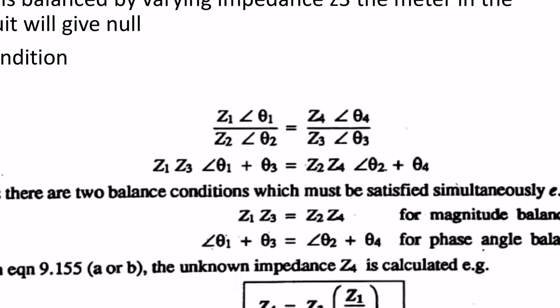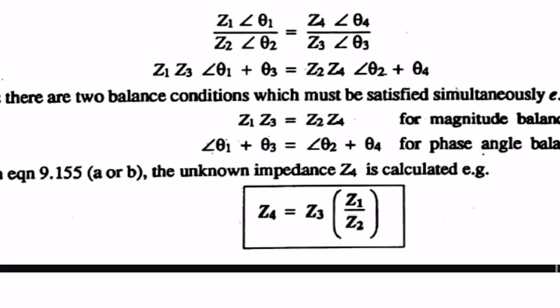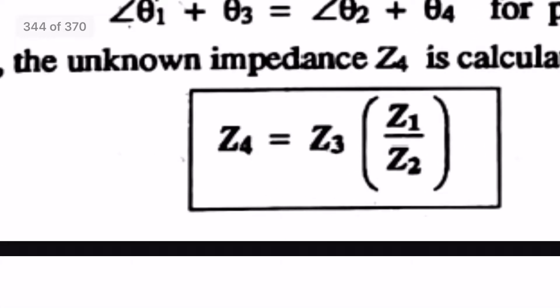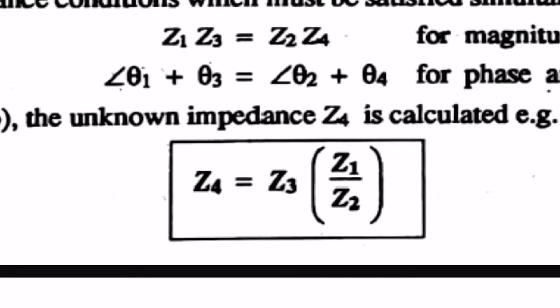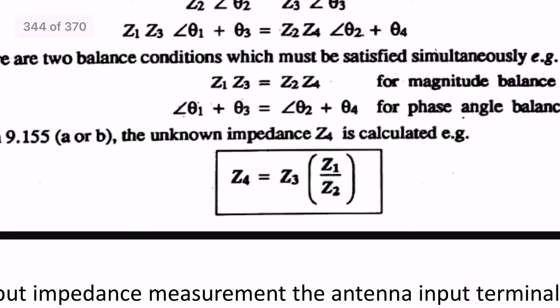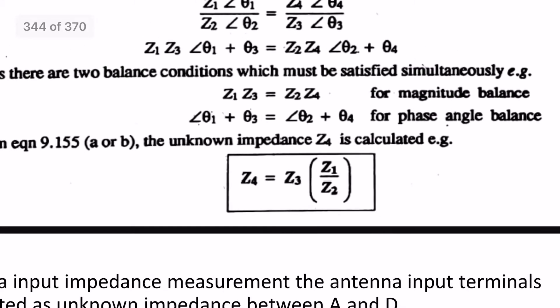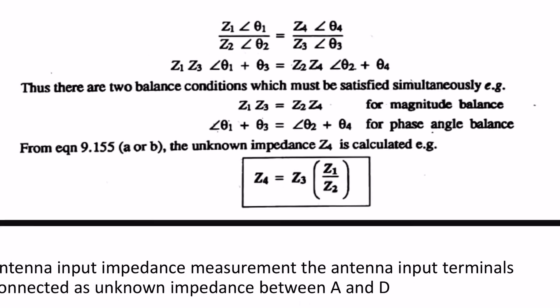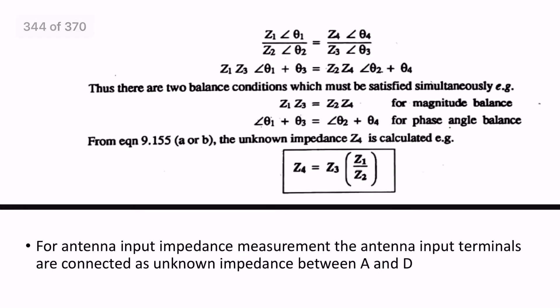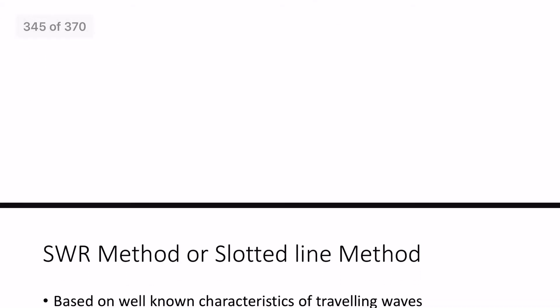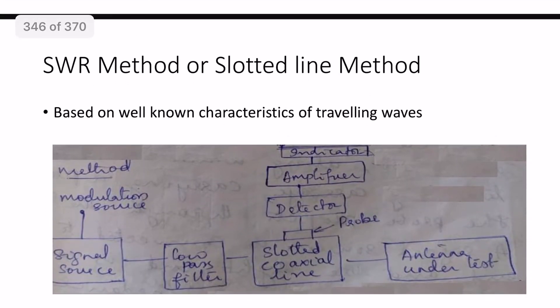The balanced condition equation is: Z1 by Z2 is equal to Z4 by Z3. From this, one unknown value can be determined: Z4 is equal to Z3 multiplied by Z1 by Z2. It is a simple bridge method used for low frequency.